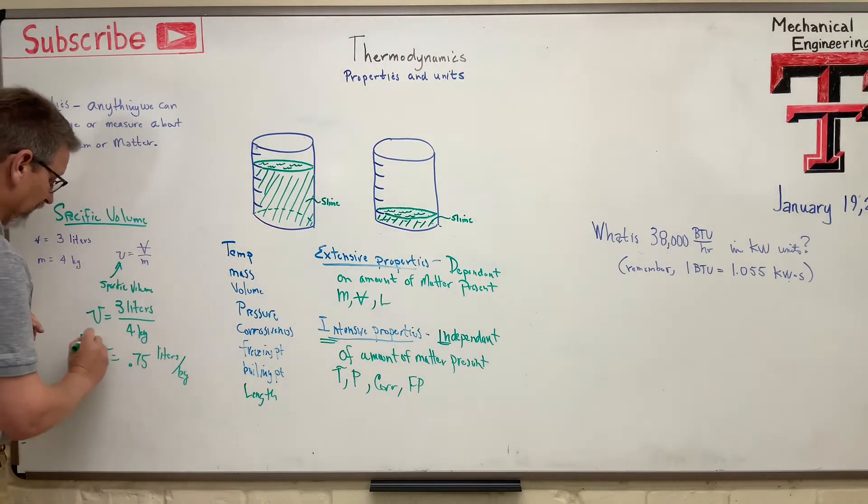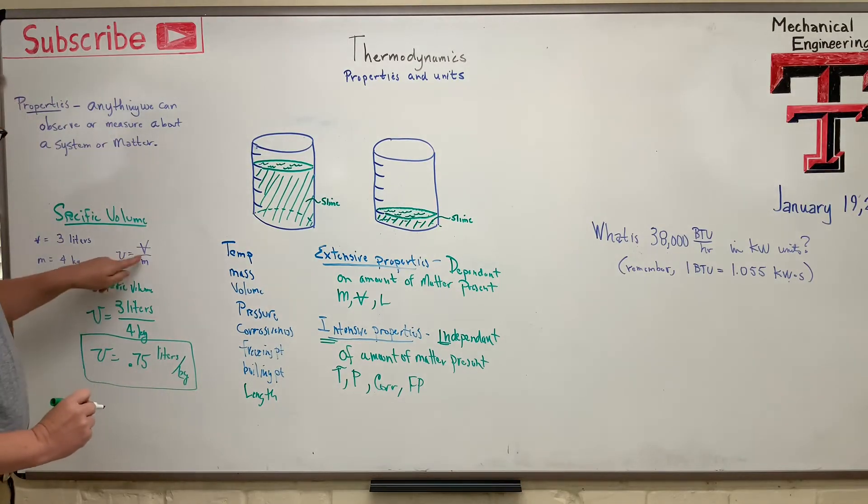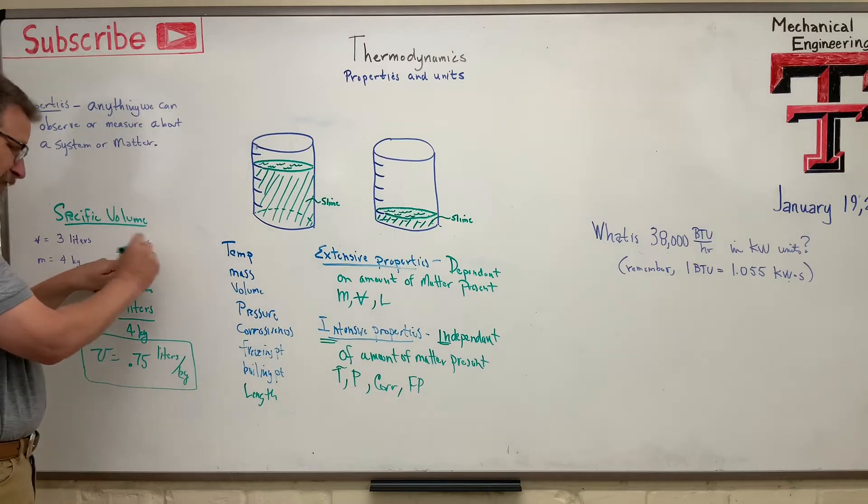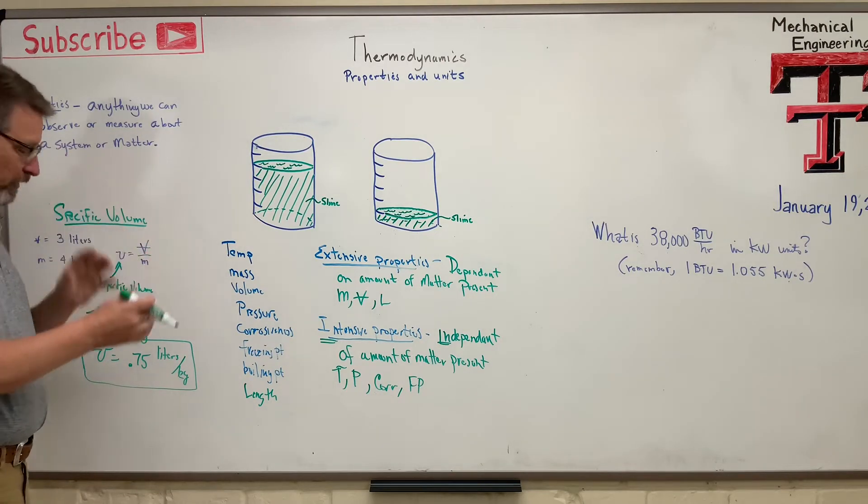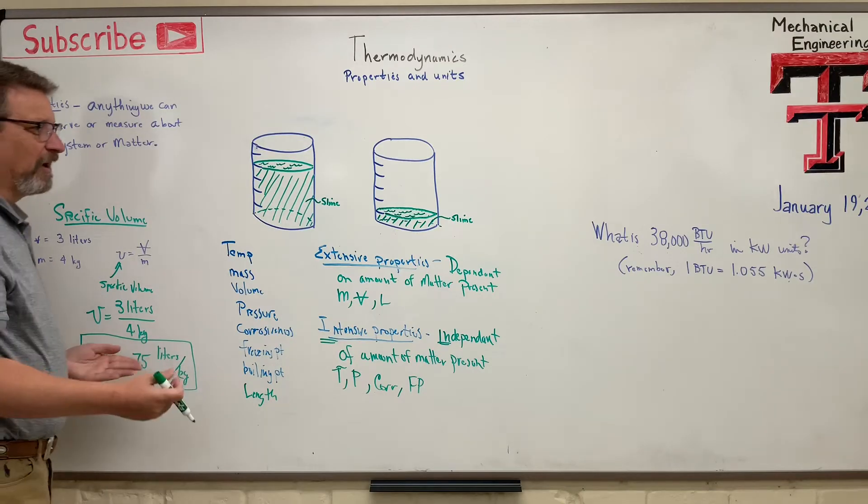I hope that's clear. So this is something that you'll see a lot is specific volume, and we denote that with a little v, and then regular volume is with, so v with a line through it is like the whole volume. Specific volume is like per unit volume. Is that clear? Okay.